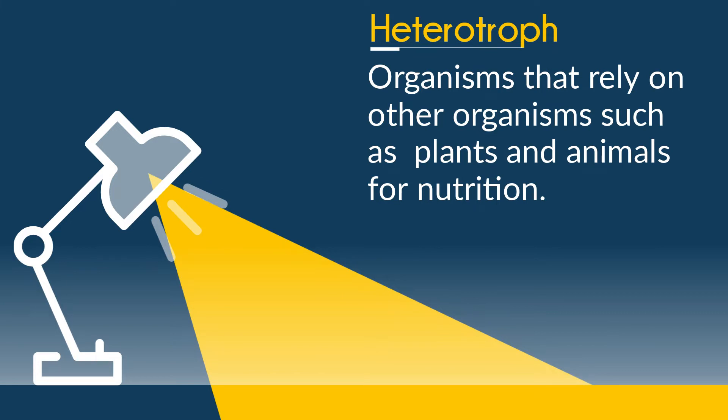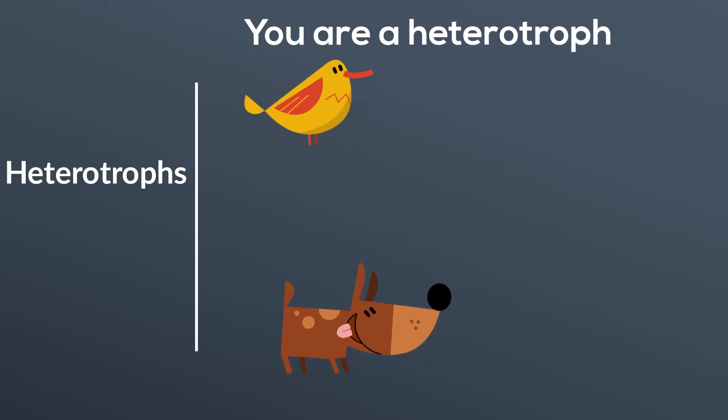Next we have a heterotroph. They are organisms that rely on other organisms such as plants and animals for nutrition. And here are some examples of heterotrophs.